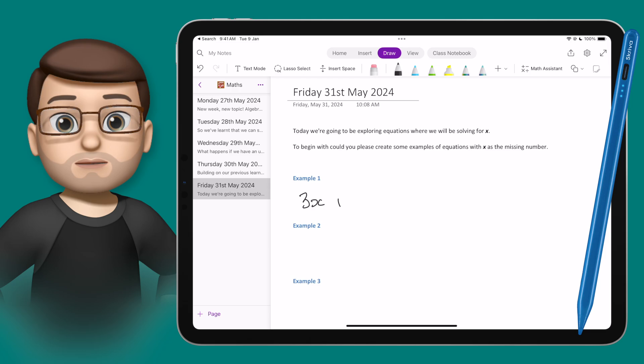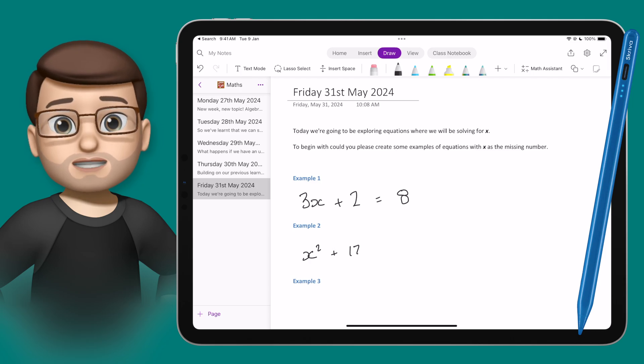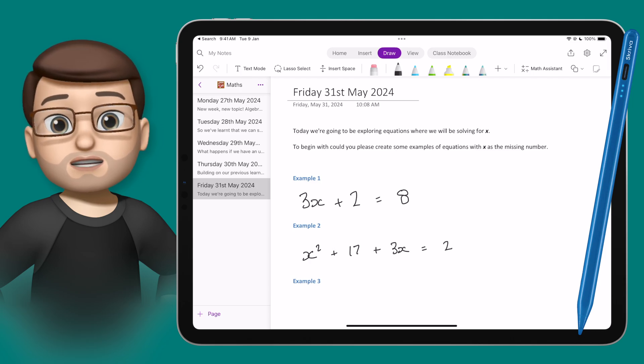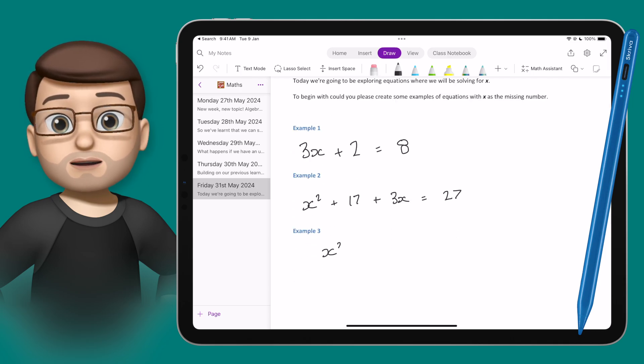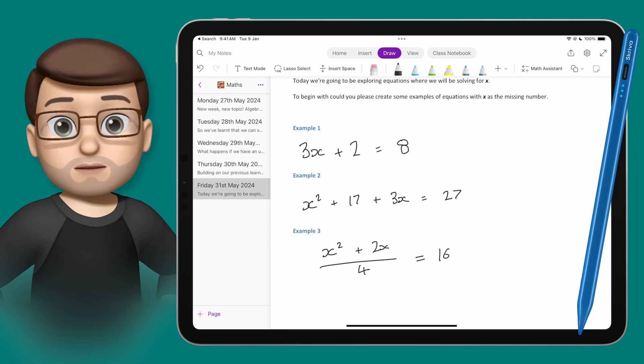So using my Scribever Stylus, I'm just going to quickly jot down a couple of expressions on this worksheet. I've got space for three here, so I'll add just three random solving for X type equations. As you can see, I'm just using the pen tool exactly as you would do on a piece of paper. Really simple, really easy, my own handwriting.